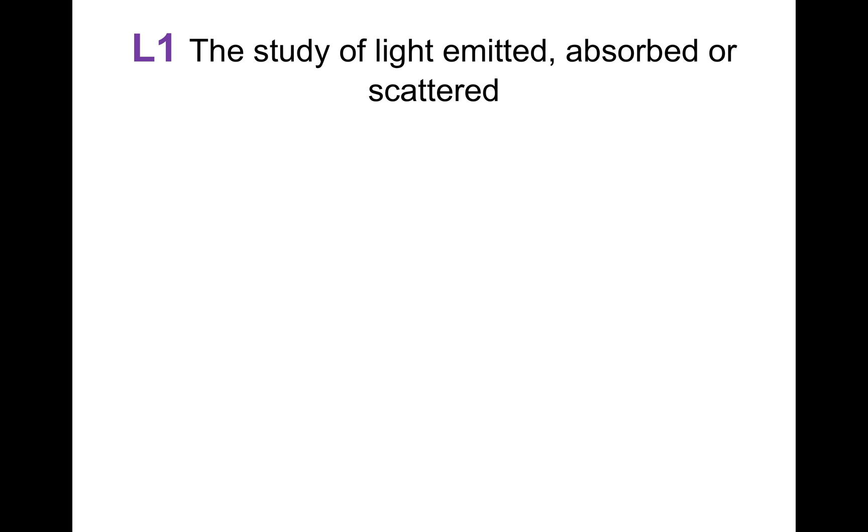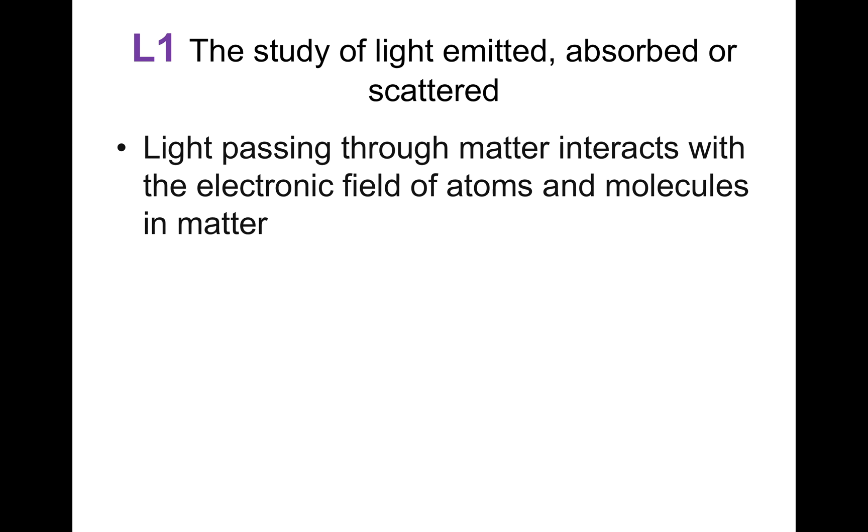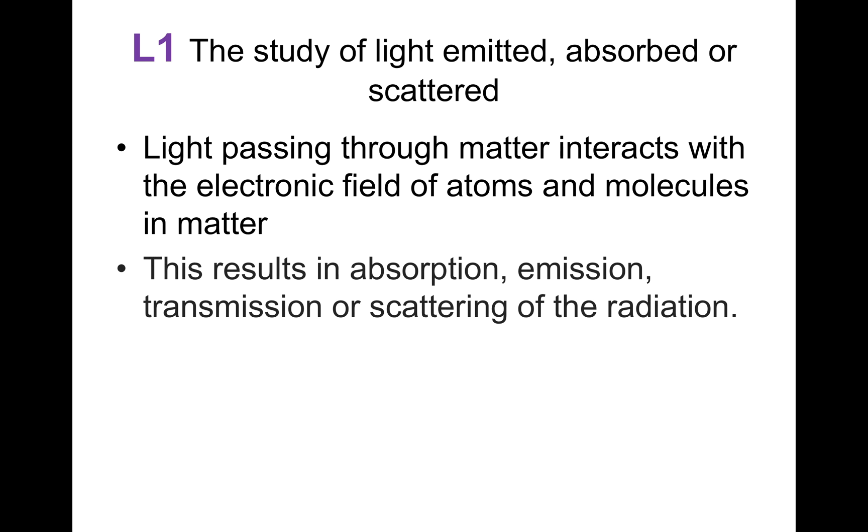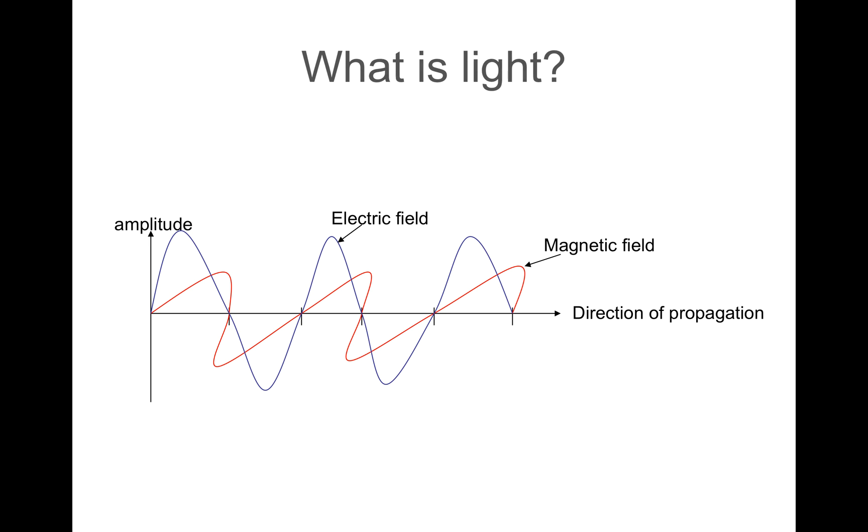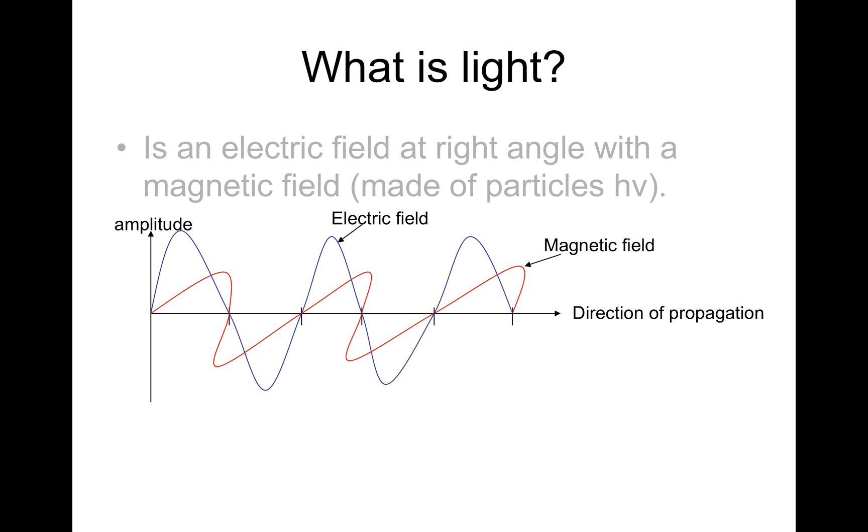Light passing through matter interacts with the electronic field of atoms and molecules in matter. This results in absorption, emission, transmission, or scattering of the radiation. What is light?